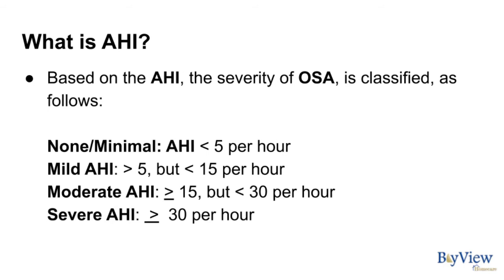Based on the AHI, the severity of OSA is classified as follows: None to minimal is an AHI of less than 5 events per hour. Mild AHI is greater than 5 but less than 15 events per hour. Moderate AHI is greater than or equal to 15 but less than 30 events per hour. Severe AHI is greater than or equal to 30 events per hour.